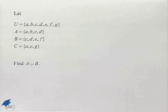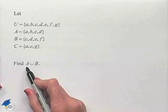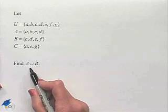We want to find A union B. Recall that union means that we're going to take any element in A or any element in B and put them together in a set.